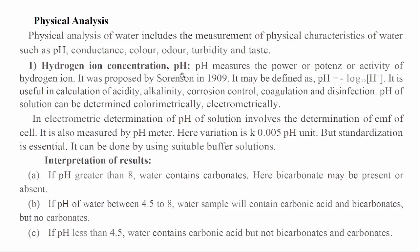1. Hydrogen-ion Concentration (pH): pH measures the power or potency or activity of hydrogen ions. It was proposed by Sorensen in 1909. It may be defined as pH = -log[H+]. It is useful in the calculation of acidity, alkalinity, corrosion control, coagulation, and disinfection. pH of a solution can be determined colorimetrically or electrometrically. In electrometric determination, pH involves the determination of EMF of a cell. It is also measured by a pH meter, with a variation of ±0.005 pH units. Standardization is essential and can be done using suitable buffer solutions.